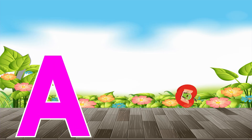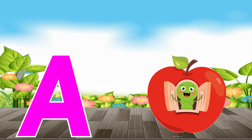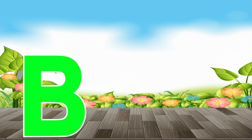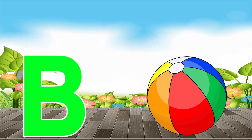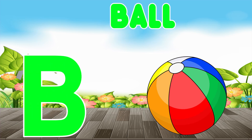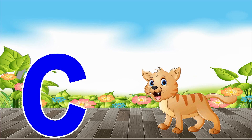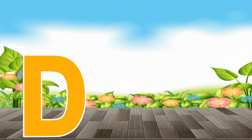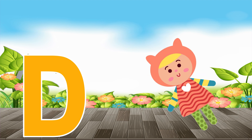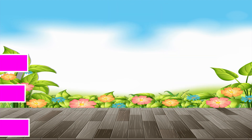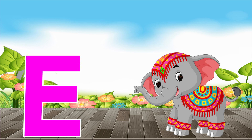A is for apple, a-a-apple. B is for ball, b-b-ball. C is for cat, c-c-cat. D is for doll, d-d-doll. E is for elephant, e-e-elephant.